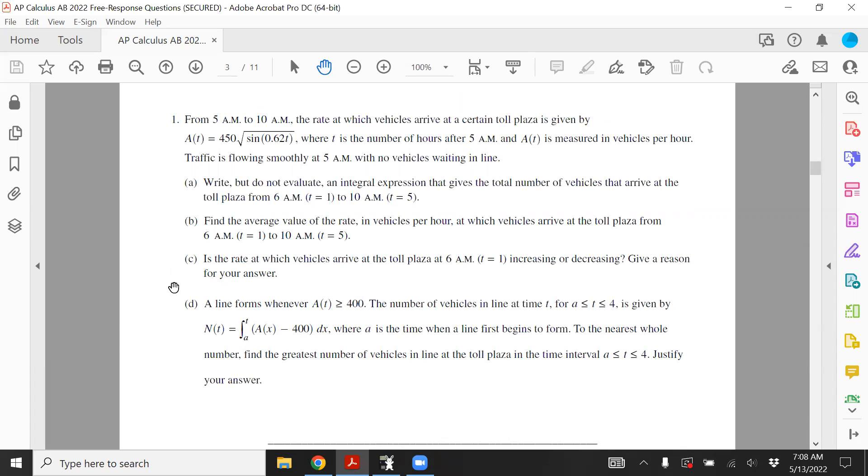You can see that they give you a formula for the number of people, the rate of number of people arriving at a toll plaza. So you can think it's like maybe the San Francisco Bay Bridge or San Mateo Bridge or Dumbarton Bridge, but there's a formula. It's some sinusoidal formula. T is the number of hours after 5 a.m., and of course, A(T) is measuring vehicles per hour. So it is a rate. We're most likely going to have to do an integral to find the number of cars that are showing up at the toll plaza. And the assumption is that there are no vehicles waiting in line, so the initial condition is zero for A(T) at 5 a.m.